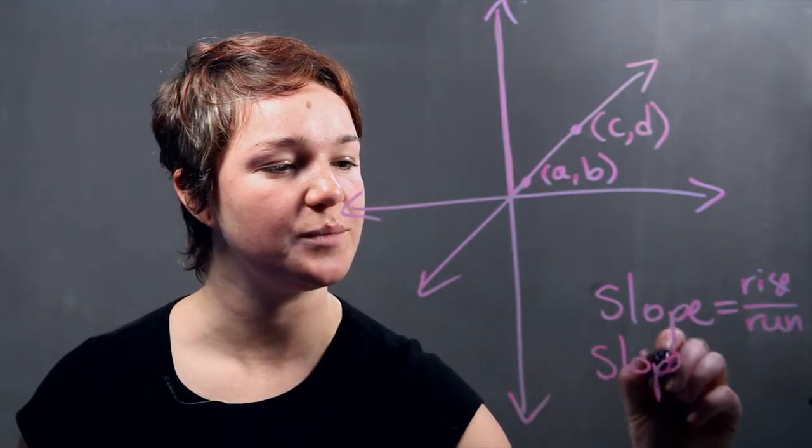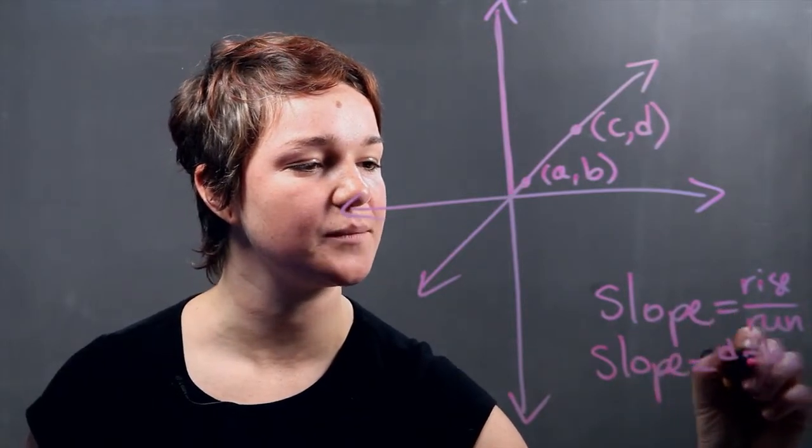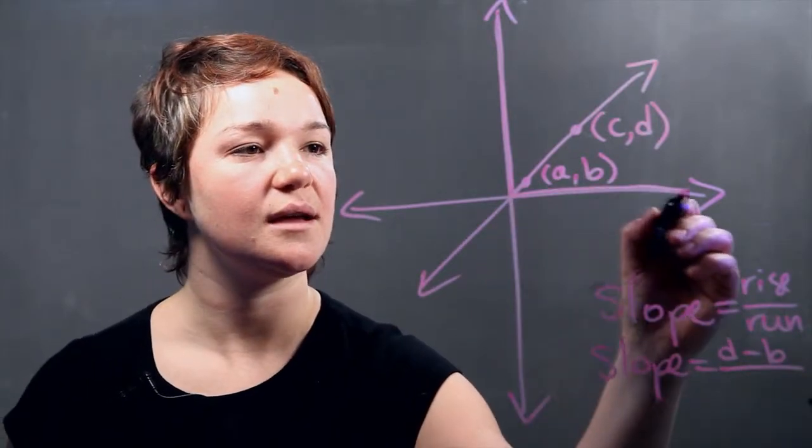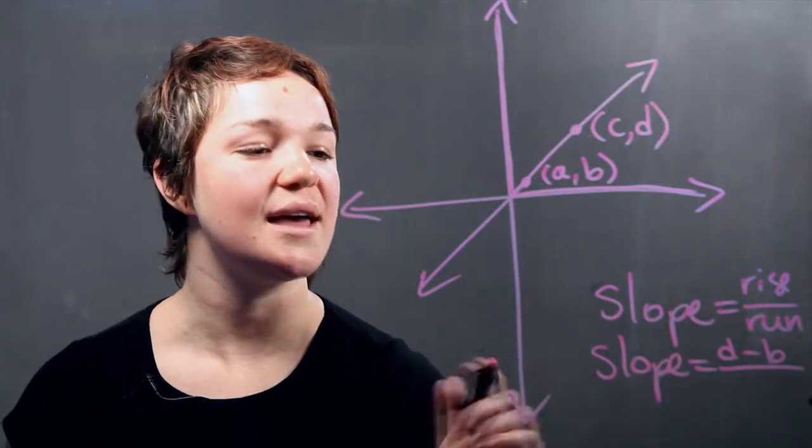So the slope would be the difference, or D minus B, over the run. The run would be the distance between A and C, or the distance along the x-axis.